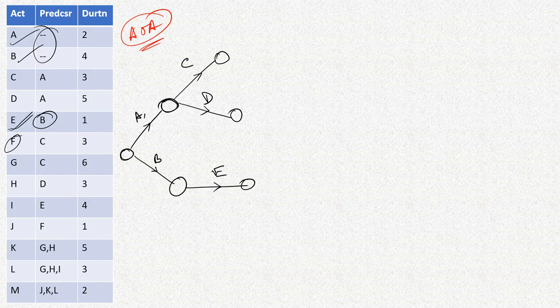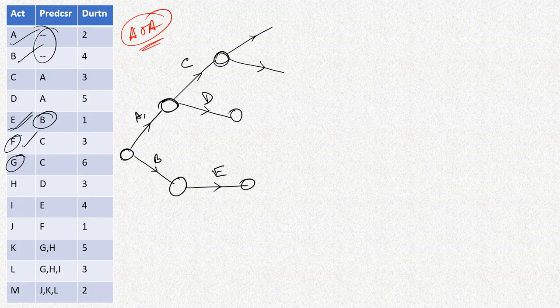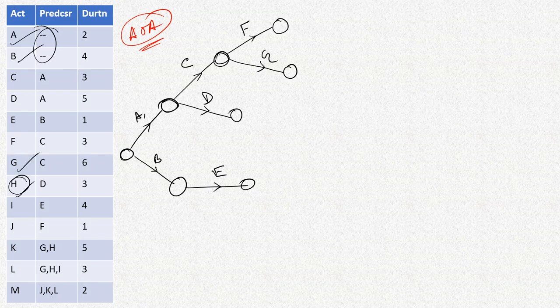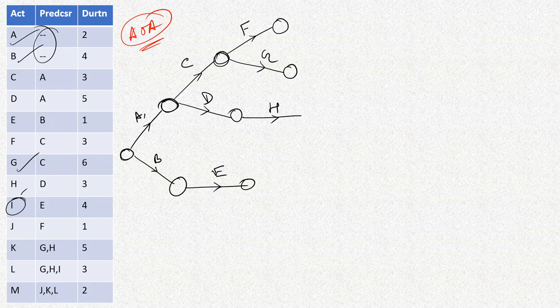Activities F and G are both dependent on activity C, so from the node representing completion of C we can start two more activities: F and G. After F and G are complete, activity H is dependent on G and D. Then comes activity I, which is dependent on E.